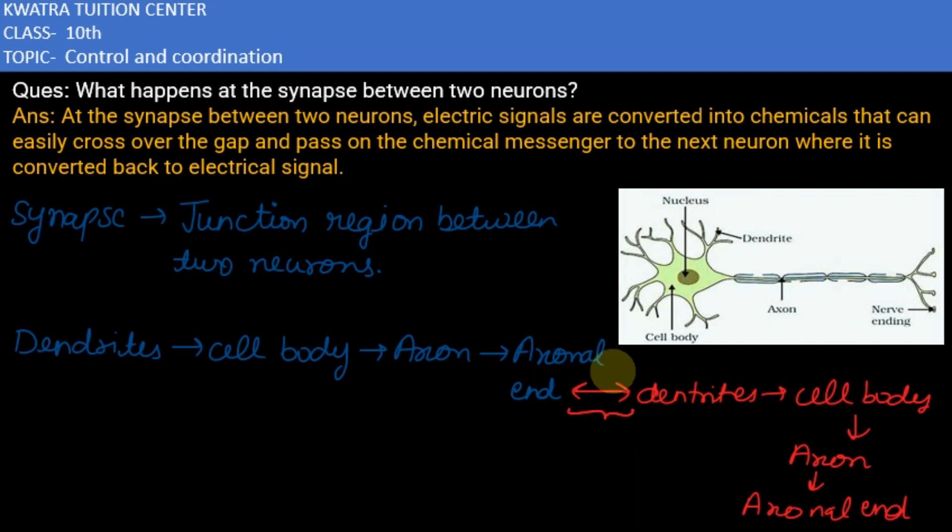And this part which provides information from axonal end to dendrites is called synapse.